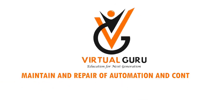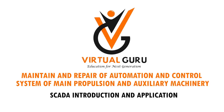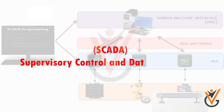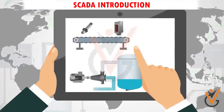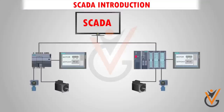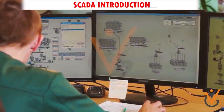SCADA introduction and application. Supervisory Control and Data Acquisition — SCADA — is a system that aims to monitor and control field devices at remote sites. SCADA is a centralized system that monitors and controls the entire area. This supervisory system gathers data on the process and sends commands to control the process. The main goal is to monitor and control equipment in industrial processes for companies in the public and private sectors. Today, SCADA systems exist almost everywhere, including industrial plants, manufacturing, transportation, oil and gas, power distribution, and water control.